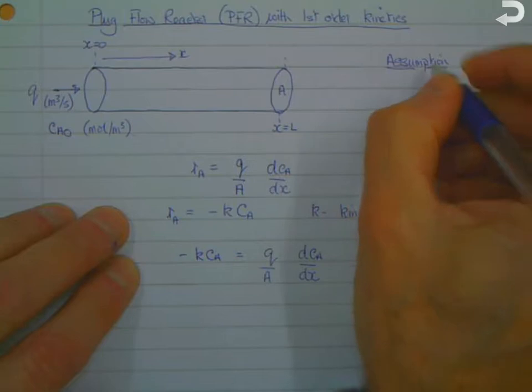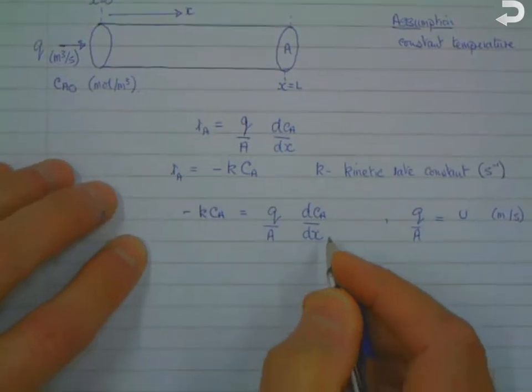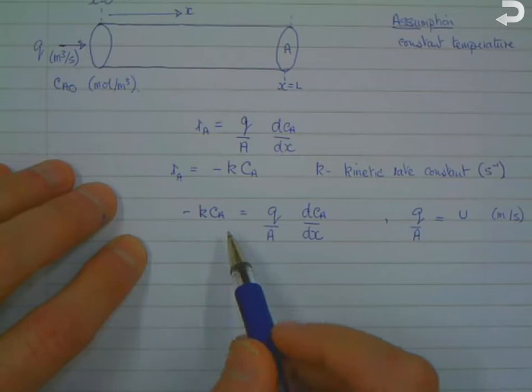And that is that we have constant temperature along the tube, so that we can assume that K is a constant value in order to allow us to do this integration.